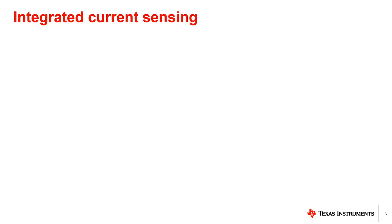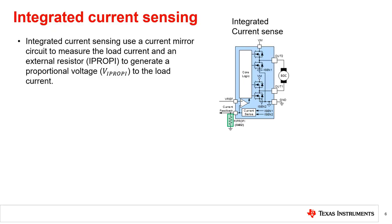Traditionally, current sensing in motor drivers is achieved using external shunt resistors. However, there is another way to sense current without a bulky shunt resistor, called integrated current sensing. The image on the right shows a block diagram of a motor driver with integrated current sensing. Integrated current sensing uses a current mirror circuit to measure the load current, scaled by the current mirror scaling factor. The output of the internal current sensing circuitry flows through the external IPROPI resistor, generating a voltage proportional to the load current. This proportional voltage, VIPROPI, is fed to the comparator of the internal current regulation circuit and can also be read by an MCU for further closed-loop feedback control.